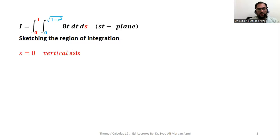Now s equal to 0 will be the equation of our vertical axis. S equal to 1 will be a vertical line. T equal to 0 is the equation of horizontal axis.